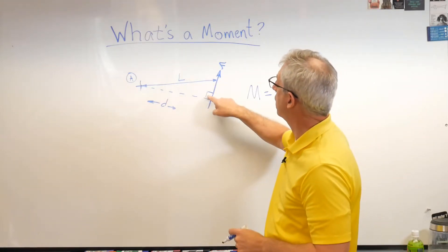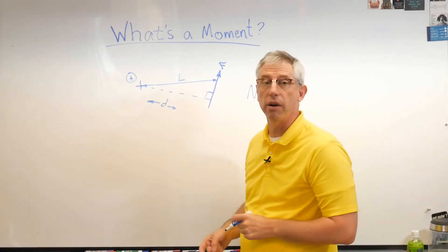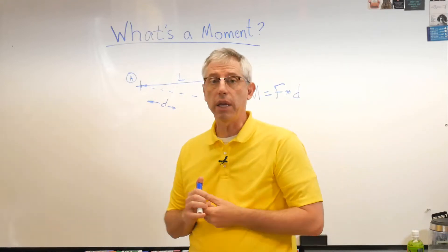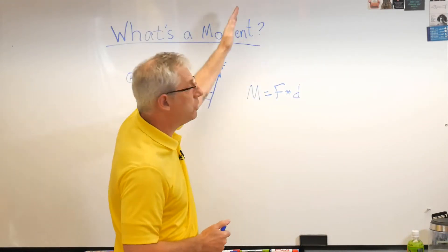You can see here I just made a right triangle, so that's 90 degrees. If you knew what either one of those angles were and you knew what L was, you could figure out D. So the force acts at a perpendicular distance. The other thing you need to know is that you can extend the force as far as you want along its line of action to calculate D.